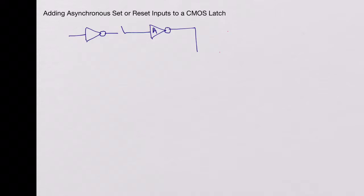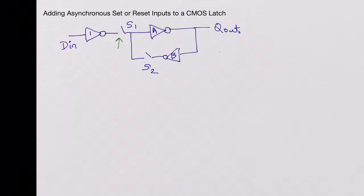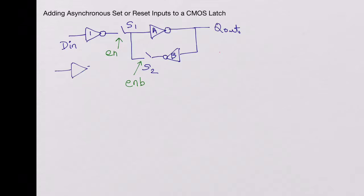Let's look at the CMOS latch we have looked at before. It consists of three inverters and two pass gates. We had the latch built with inverters A and B, switch S2, switch S1, and inverter 1, with D in here and Q out here. Switch S1 is closed with enable and switch S2 is closed with enable bar, using an inverter to bring in enable and invert it to give the signals needed for the CMOS pass gates S1 and S2.